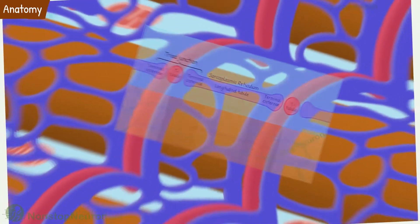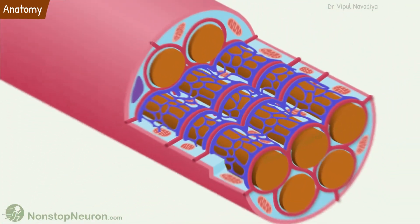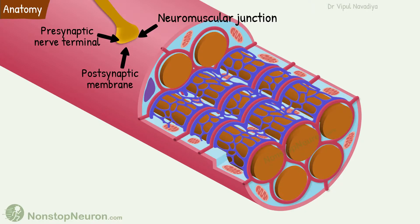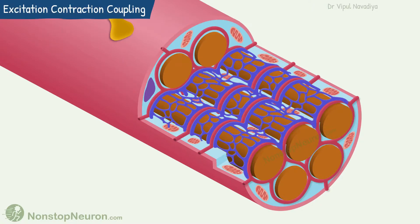This was all inside the cell. On the cell membrane, we have the neuromuscular junction having a presynaptic nerve terminal and post-synaptic membrane, which is basically the muscle plasma membrane. This was all the anatomy. Now let's see how muscle contracts.